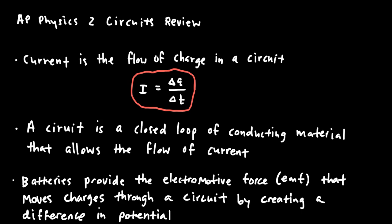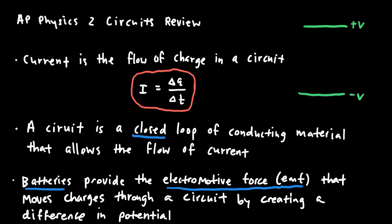In order to have a circuit you need a closed loop of conducting material that allows the current to flow. Typically it is a battery that provides an electromotive force or EMF that allows the charges to move. The battery creates a difference in potential between two points — maybe plus V and minus V — creating an electric field within the battery and throughout the entire circuit. That electric field causes a charged particle like an electron to move in a certain direction.